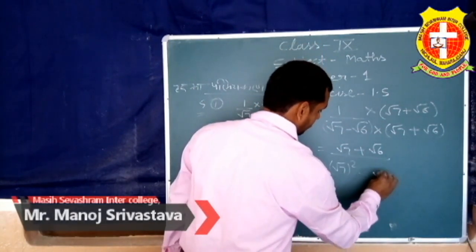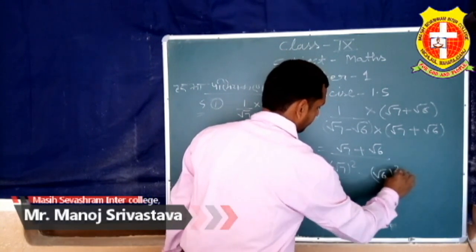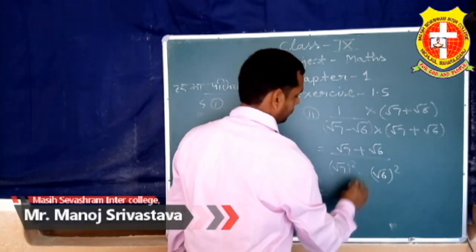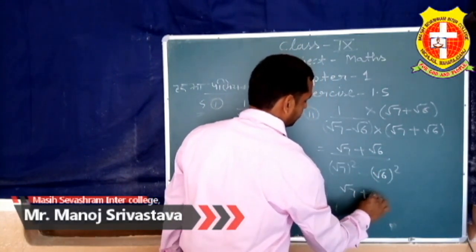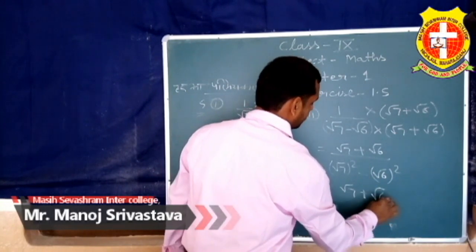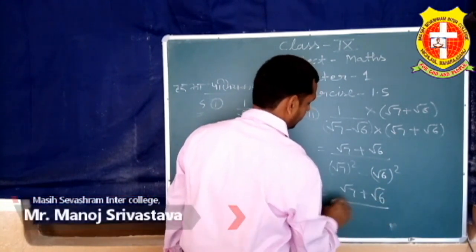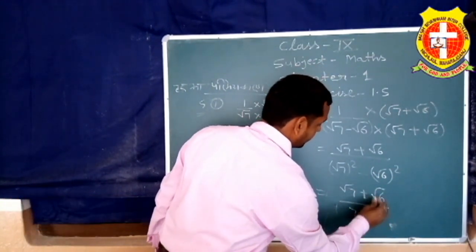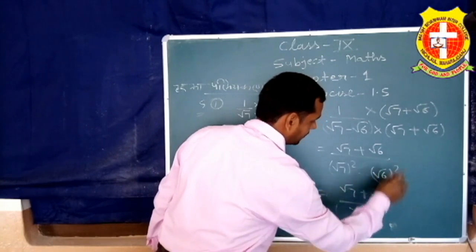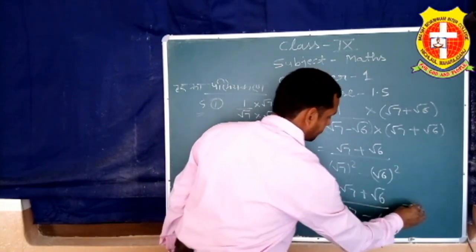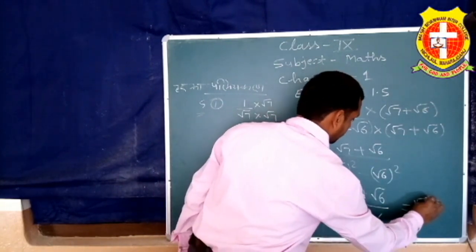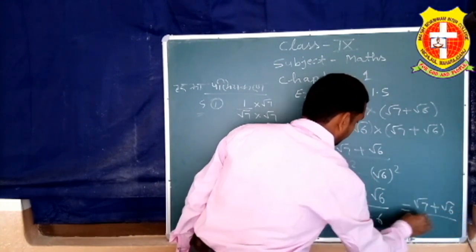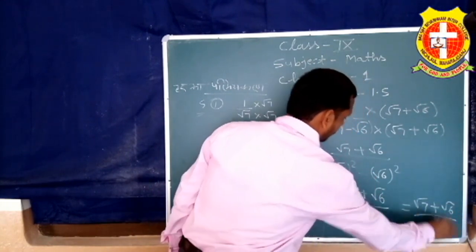हर में (√7 − √6)(√7 + √6) = 7 − 6 = 1 हो जाता है। तो answer है (√7 + √6)/1 = √7 + √6।